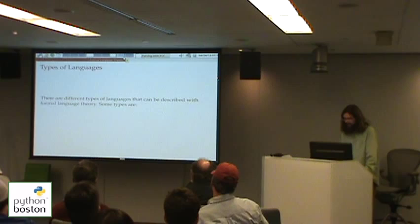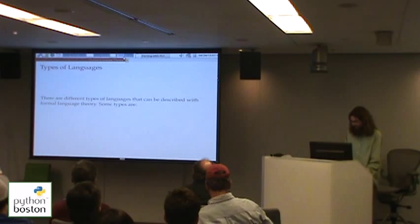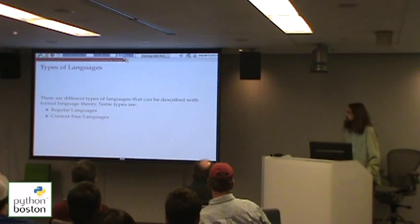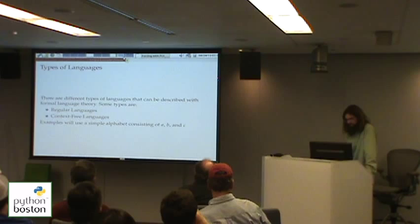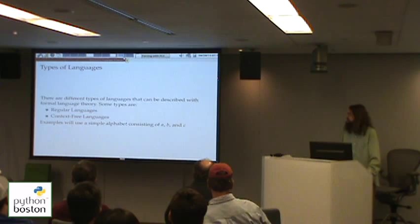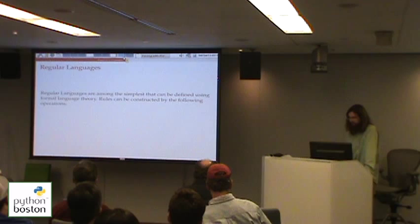There are different kinds of languages that can be described in formal language theory. I'm going to discuss two of them today: regular languages and context-free languages. These are both very important concepts for understanding how to write a parser. I'll give you examples using a simple alphabet containing three symbols: A, B, and C.